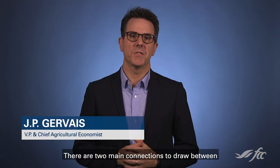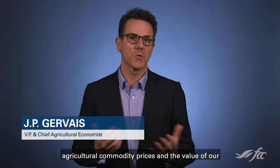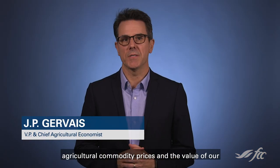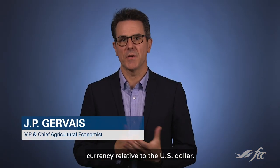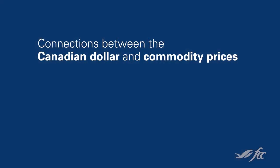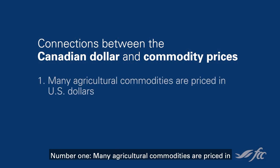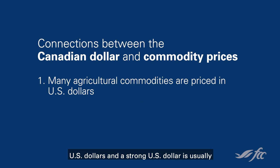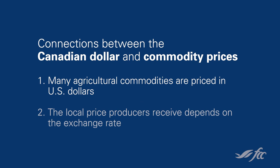There are two main connections to draw between agricultural commodity prices and the value of our currency relative to the U.S. dollar. Number one, many agricultural commodities are priced in U.S. dollars, and a strong U.S. dollar is usually associated with lower commodity prices.